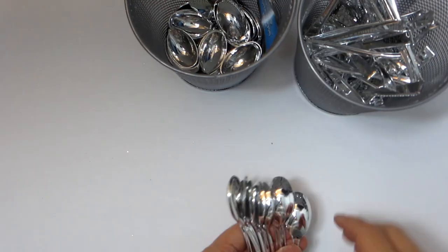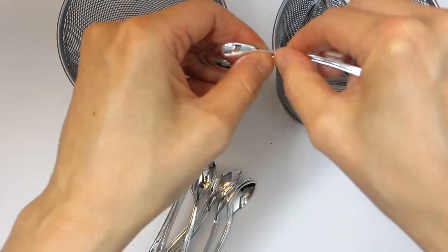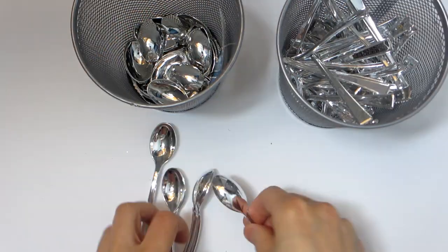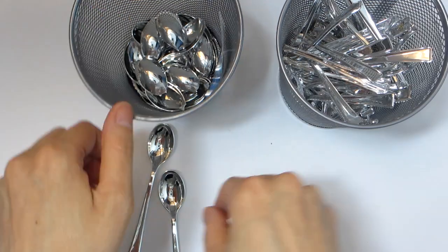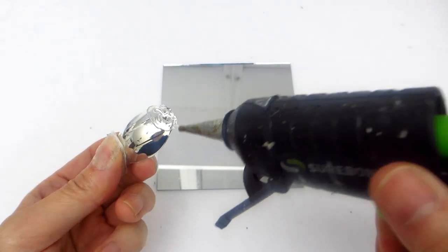To begin we will be snapping off the round part of each silver plastic spoon. Depending on the size of your mirror and jar you may need several packs of silver plastic spoons. Dollar Tree sells them in a 24 pack in case you need to stock up.